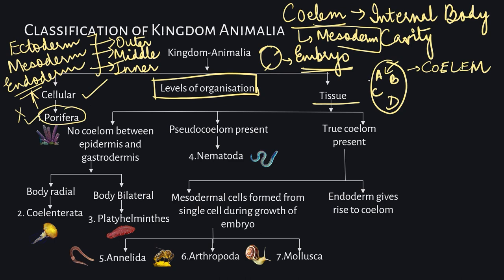To summarize: an embryo has three distinct layers — the ectoderm (outer layer), mesoderm (middle layer), and endoderm (inner layer). The ectoderm differentiates into the epithelial tissue. The mesoderm gives rise to the coelum, the internal body cavity under which the internal organs lie. The endoderm forms the innermost layer. Not all organisms have all three layers, and not all organisms even have a coelum.